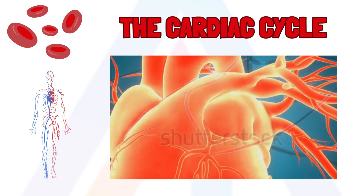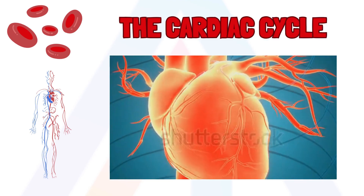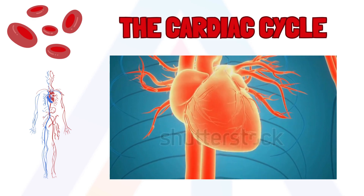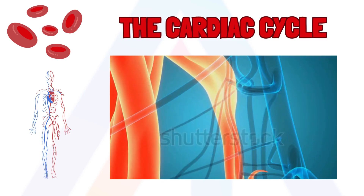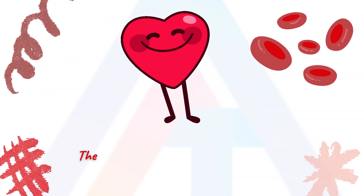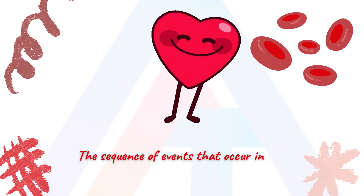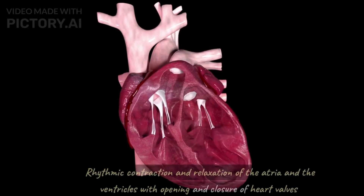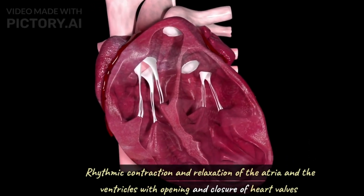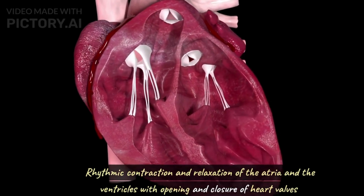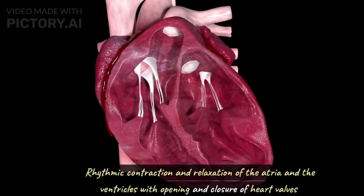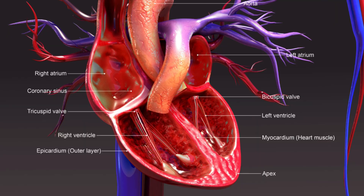Hello everybody. Welcome to the next lecture from AAT Learning Hub. This week we are going to deal with the cardiac cycle and learn about how each part of the heart synchronously coordinates to pump blood. The cardiac cycle is a sequential event that occurs in the heart during each heartbeat that is cyclically repeated. It includes contraction and relaxation of both the atria and the ventricles, along with the opening and closure of the heart valves, allowing blood to be pumped through the heart into the body.